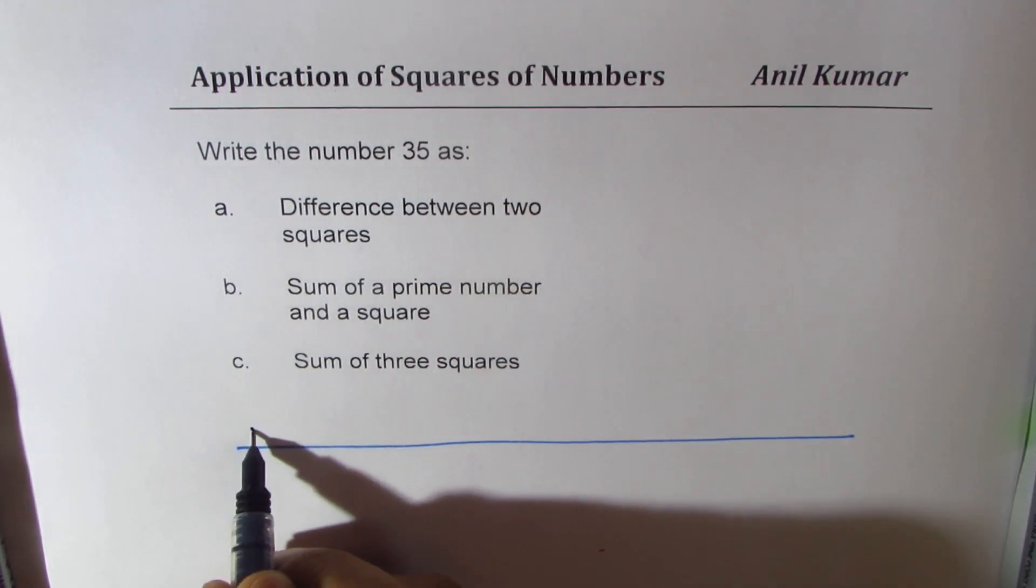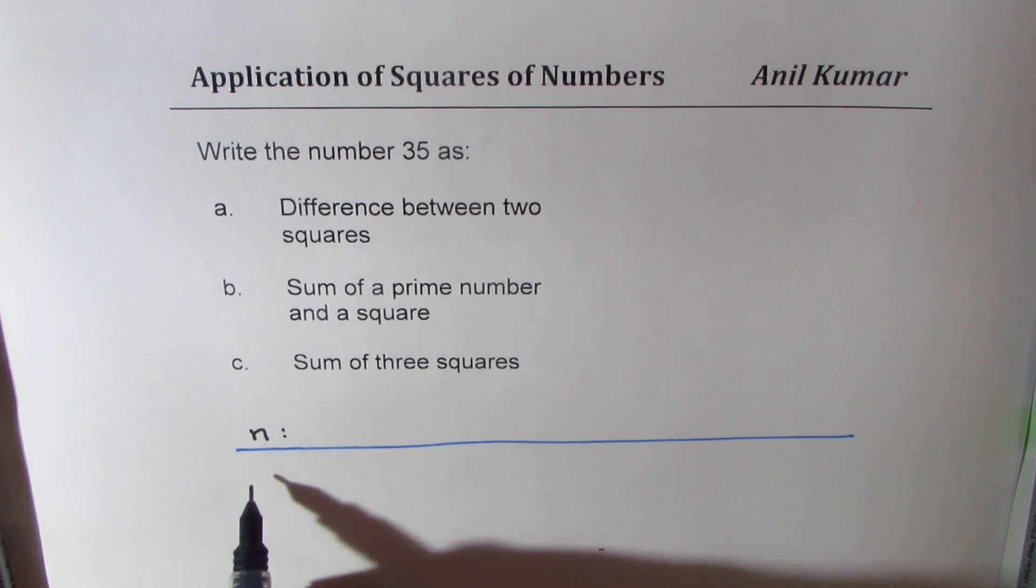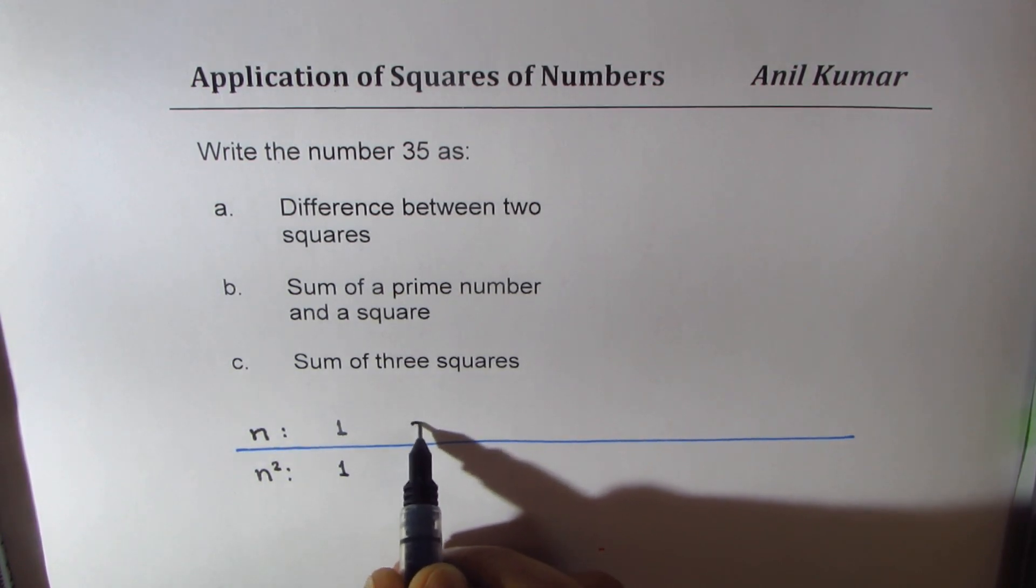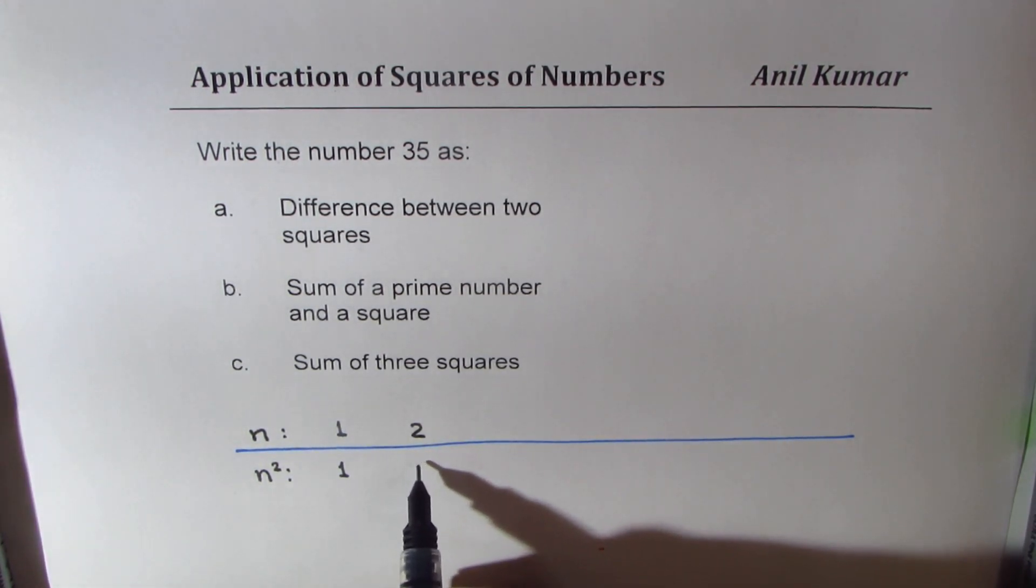The numbers could be, let's say numbers we write, and we'll write their squares. For example, 1, square of 1 is 1, 2, 2 square is 4, so we write 4.